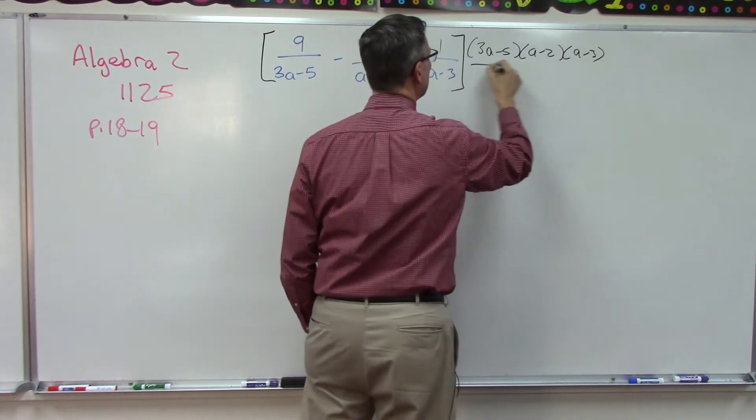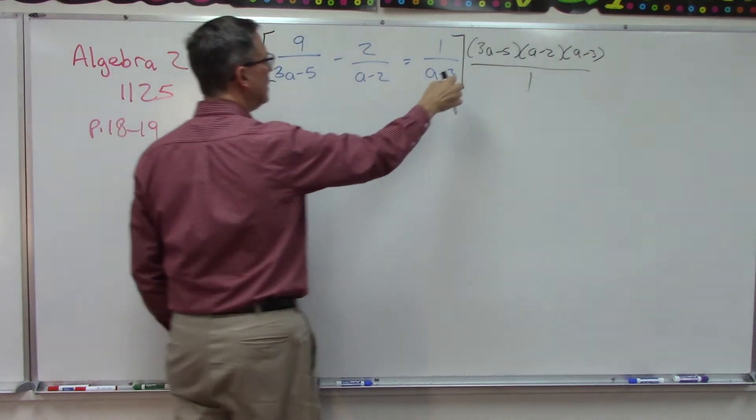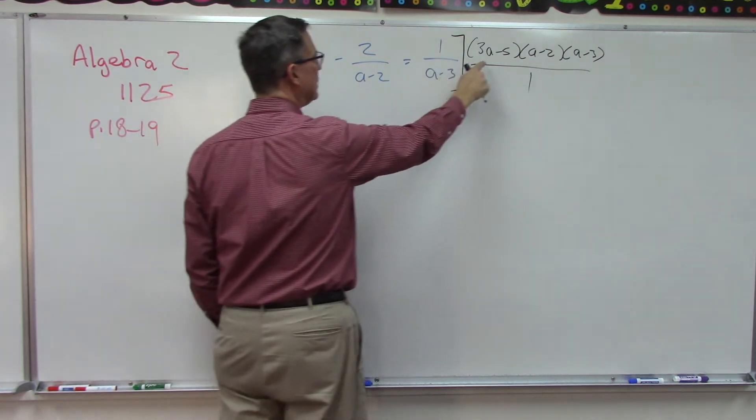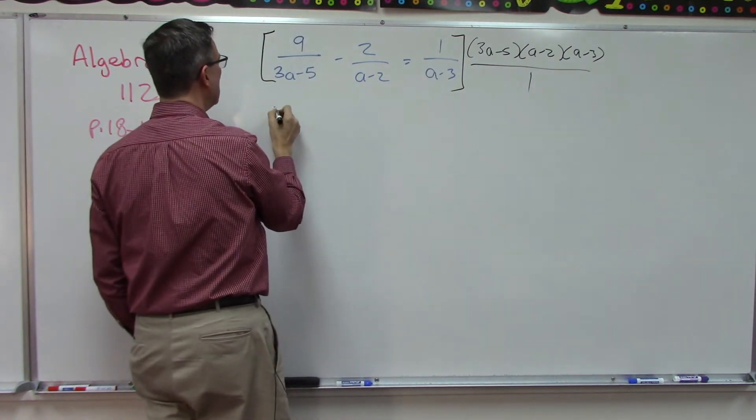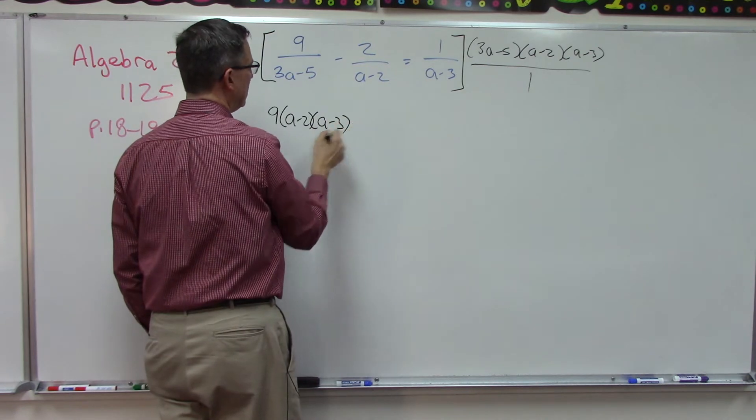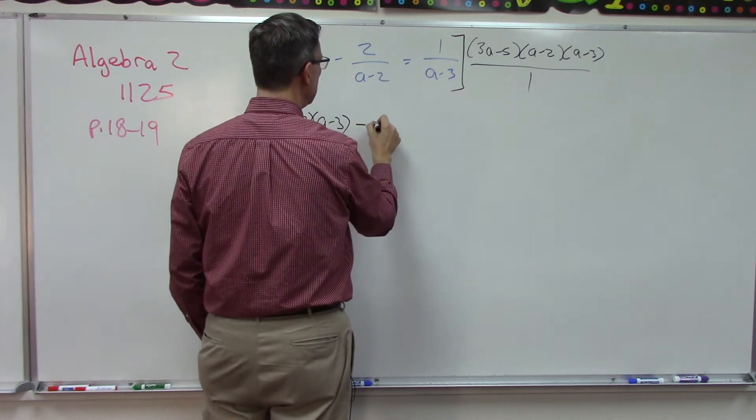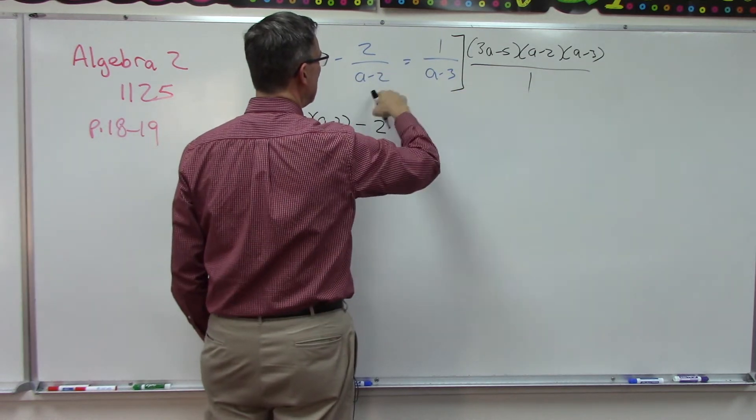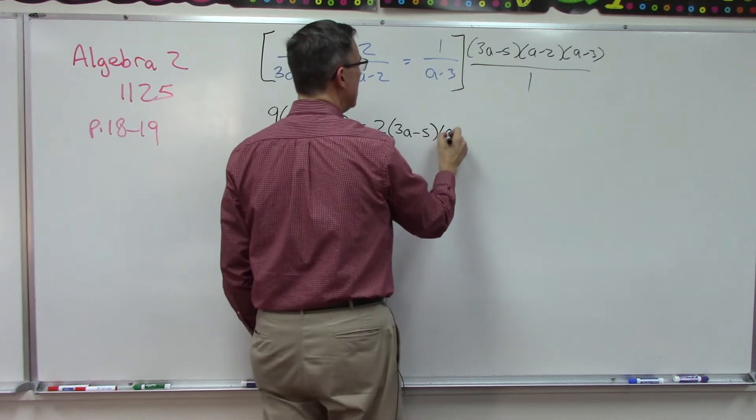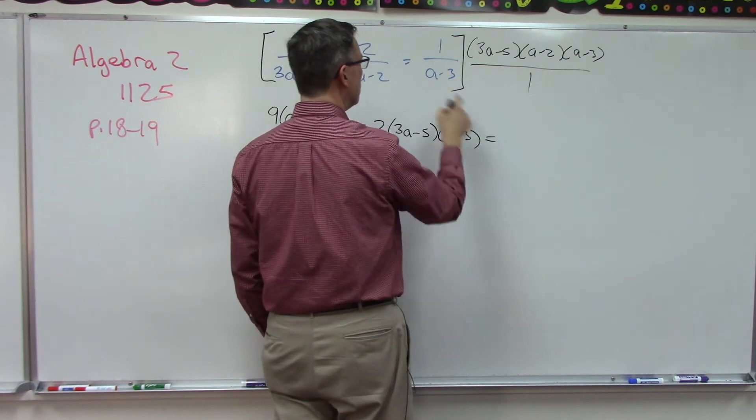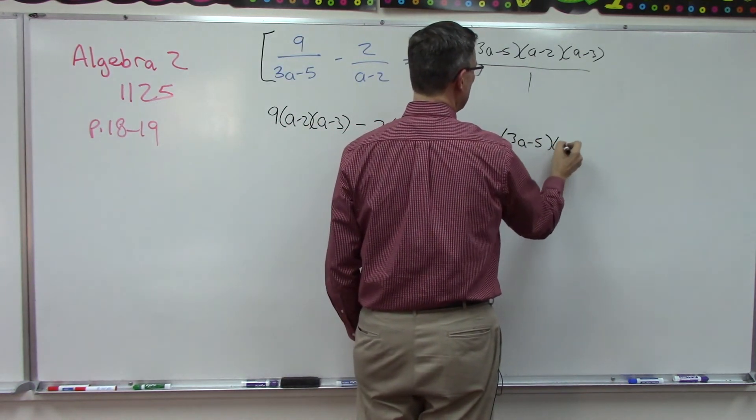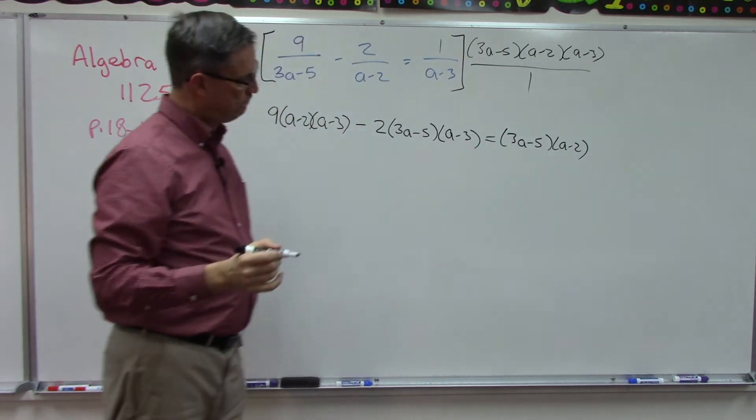It's kind of like putting all that over one. Now imagine multiplying that times just this first term. The 3a minus 5 would cancel the 3a minus 5, so what would I have left? Nine and then parentheses a minus 2, a minus 3. Minus two. Now here what cancels? The a minus 2 cancels, but I'm still left with 3a minus 5 and a minus 3. Equals. Now the a minus 3 cancels out, and so now I have the quantity 3a minus 5 and a minus 2. Now that is pretty long.